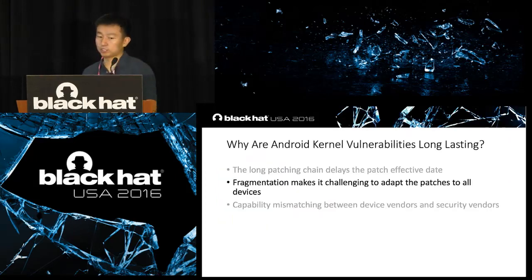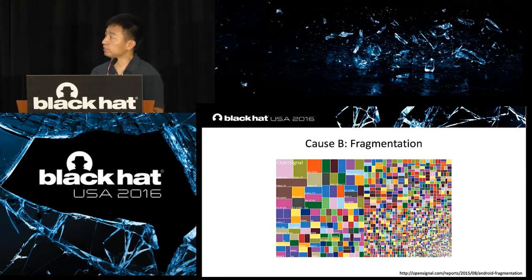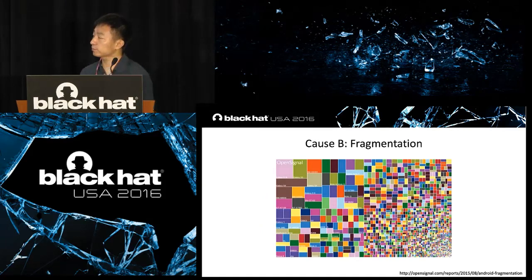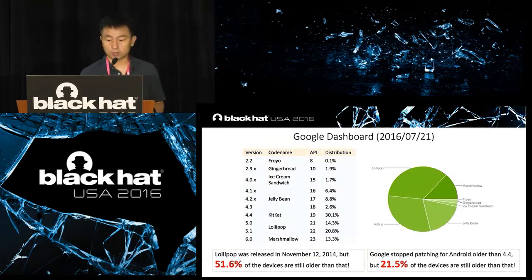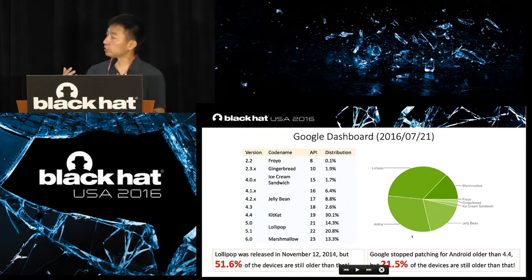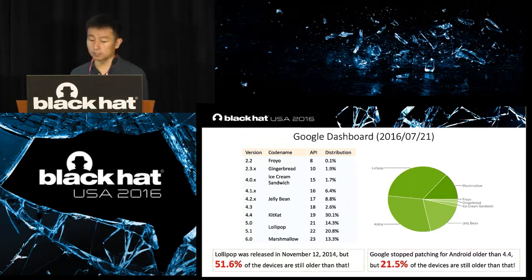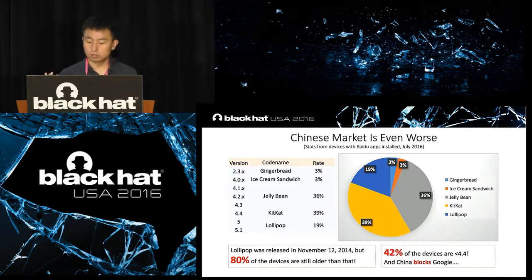The second challenge is fragmentation. The Android fragmentation graph shows a very severe situation for vendors and security researchers alike. As a version fragmentation example, there are still a lot of old versions in real-world devices today. In some local markets, it is even worse — in the Chinese market, there are still more than 40% of devices older than Android 4.4.